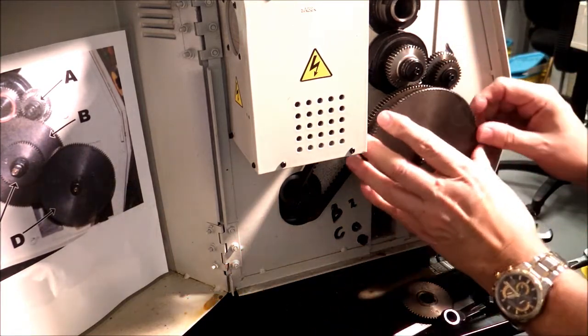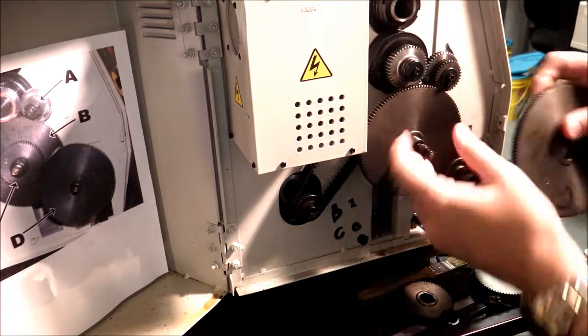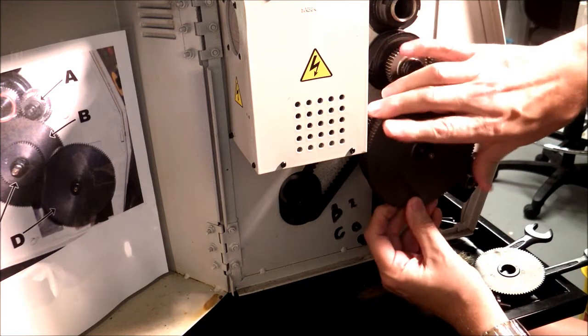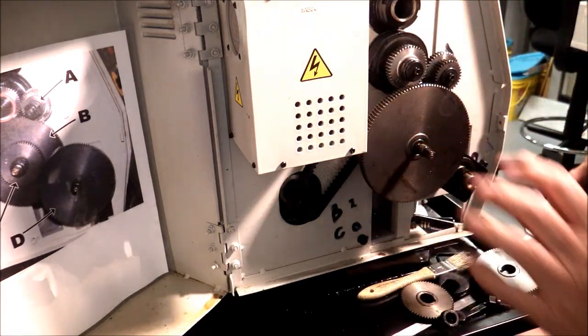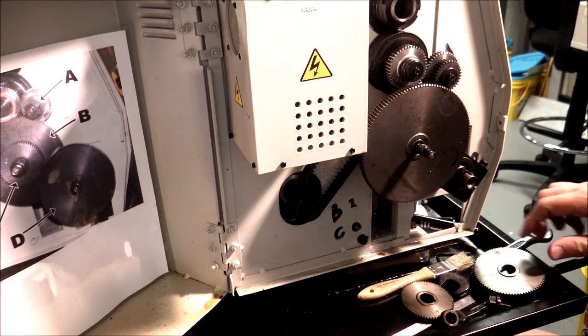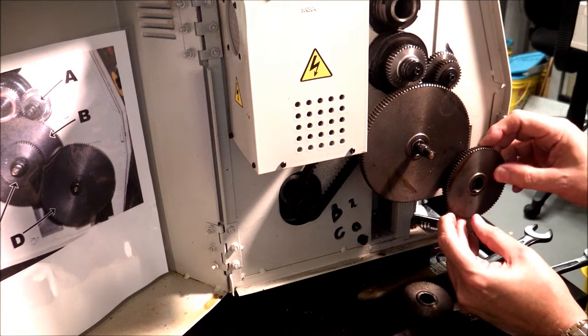Now we stick on the 127. Got to get the keyway lined up. And right away when I go to use the 80, you can see the issue.